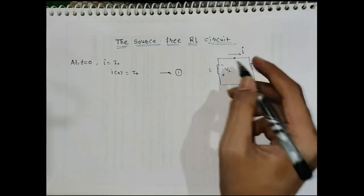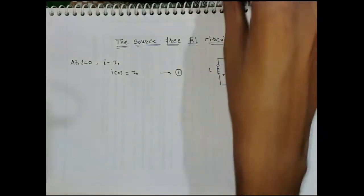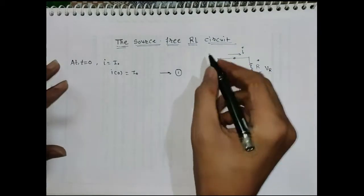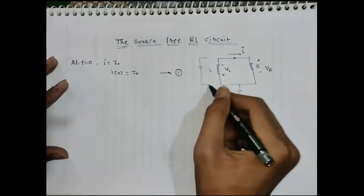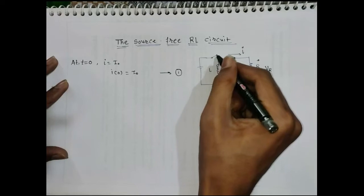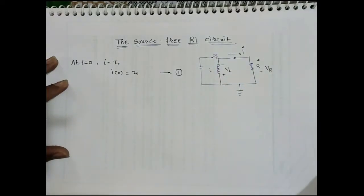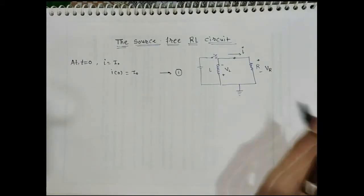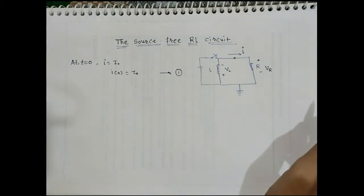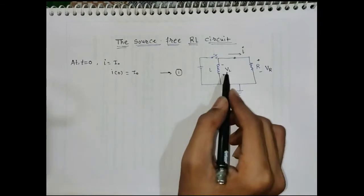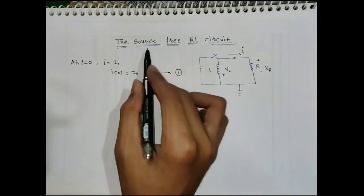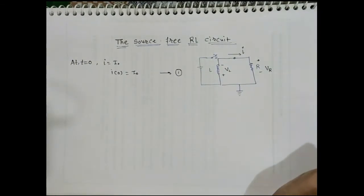We assume that initially the inductor is charged by some external source. When the key is pressed, the inductor is charged to an initial current value of I₀. Now we are talking about a source-free circuit, so source-free circuit means the inductor or capacitor is initially charged.